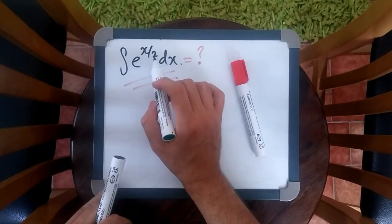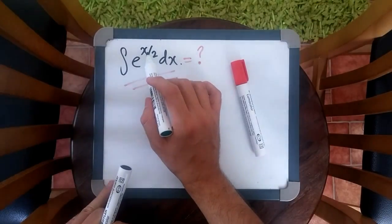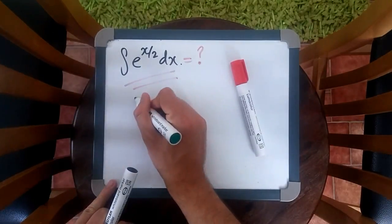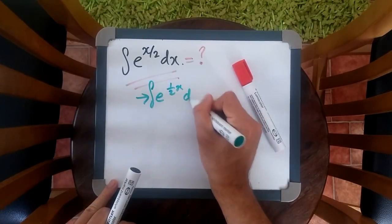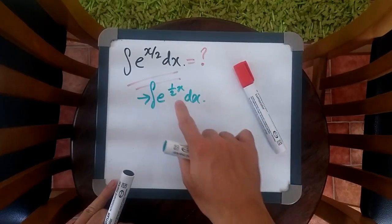Basically, the idea is when you have a constant attached to the x and notice that x is on the top line, this can be rewritten as e to the power of half x. And of course, this is what you're integrating. If you think about it, this is just a constant.